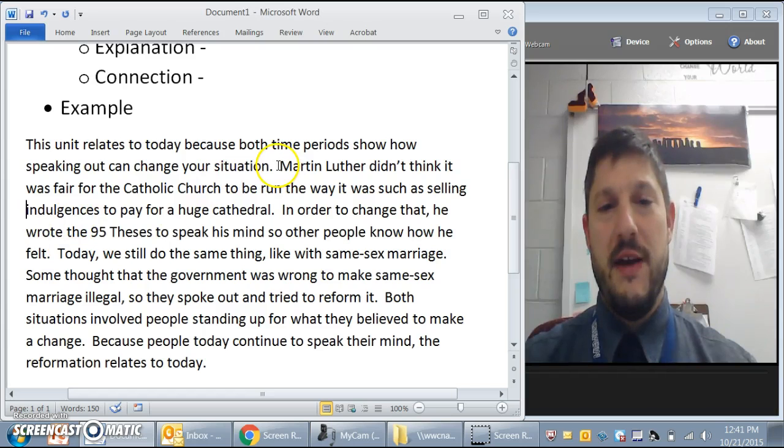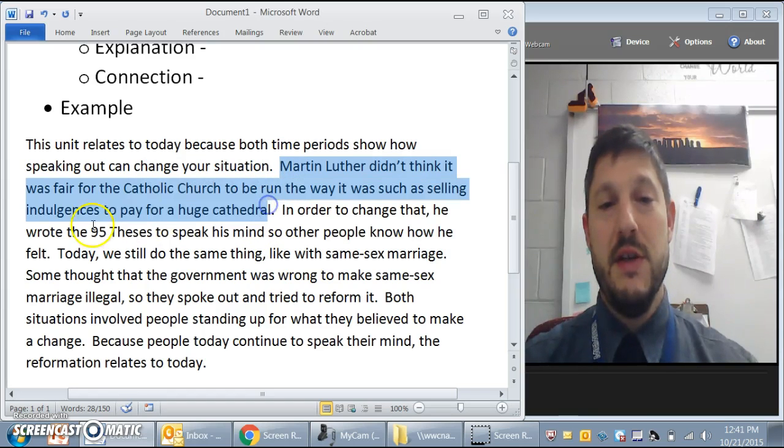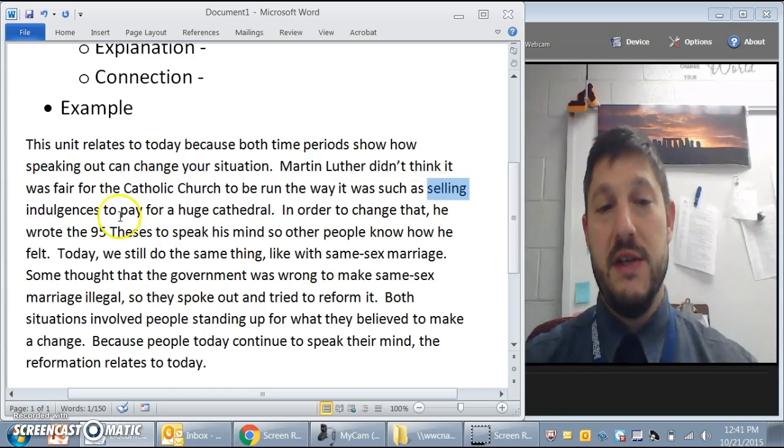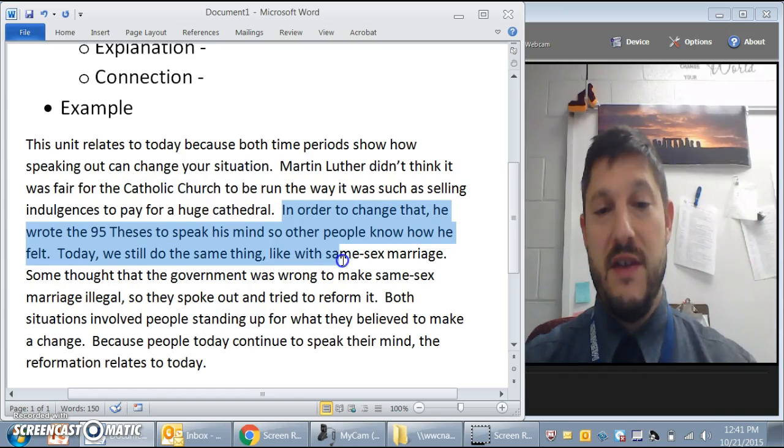So here we have our assertion. Okay, making a statement. Then here we have our proof with specific examples such as selling indulgences and building a huge cathedral. It would have been even better maybe to say St. Peter's Cathedral. Now we're going to explain. In order to change that he wrote the 95 theses. We're still kind of on proof here.